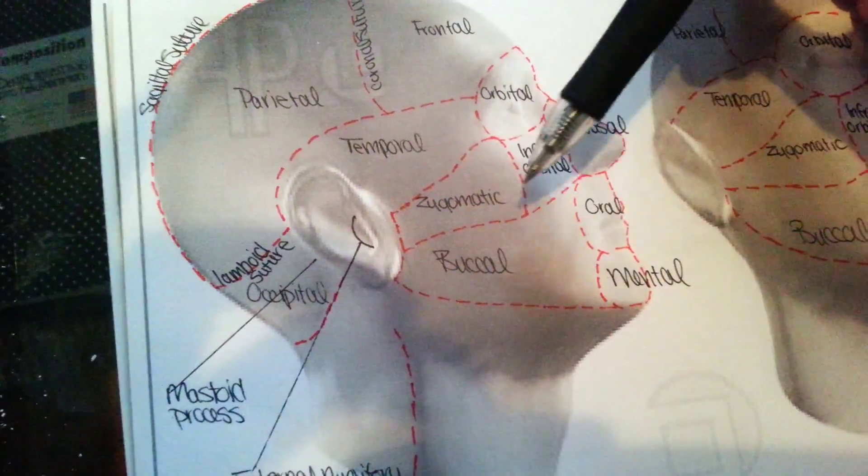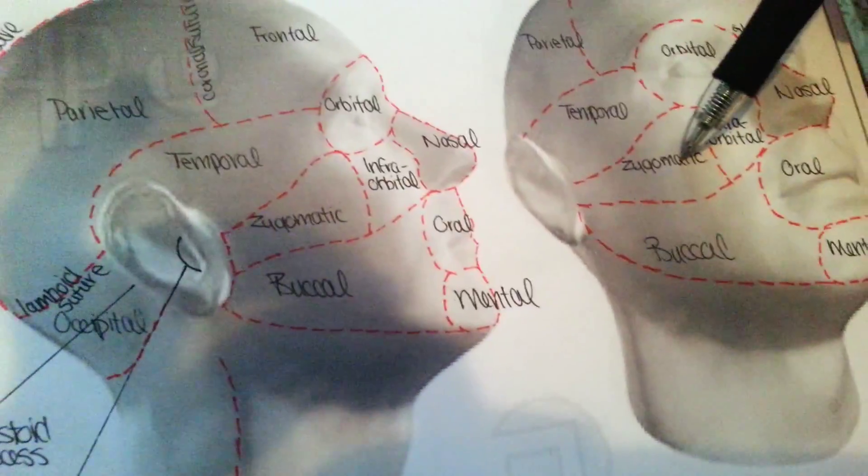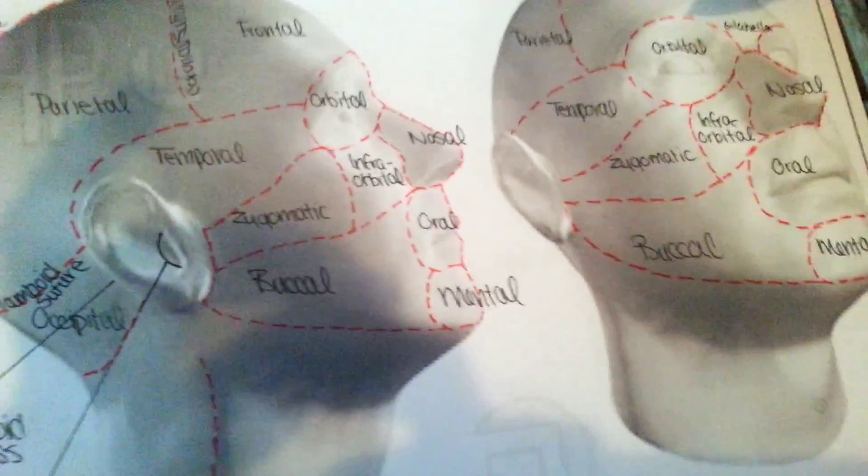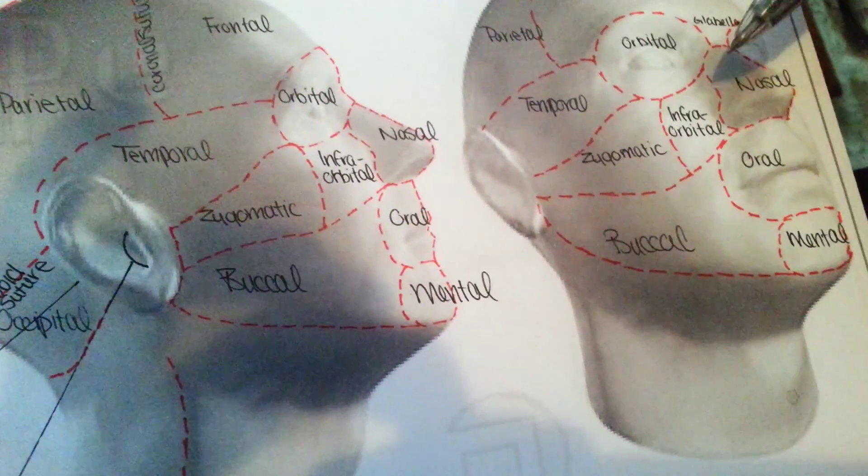Zygomatic is the cheekbones, as you can see, this guy as well. Orbital eyes, nasal nose.